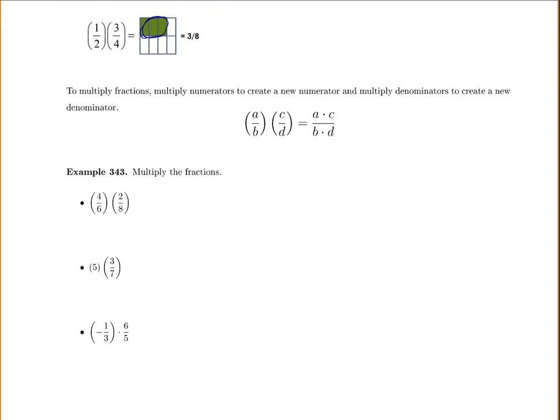So to multiply fractions, we multiply the numerators to create a new numerator and multiply the denominators to create a new denominator. So you multiply the tops, a times c, and you multiply the bottoms, b times d. So let's try this. Multiply the tops, multiply the bottoms. So we'll have four times two over six times eight, or in other words, that would be eight over 48. If you're trying this on your calculator, it will probably simplify this to one out of six.